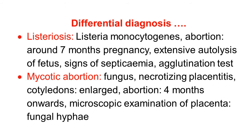Certain fungi cause abortion, known as mycotic abortion. There is characteristic necrotizing placentitis and the cotyledons are enlarged. Abortion occurs from 4 months of pregnancy onward. Confirmation is made by microscopic examination of the placenta, which shows characteristic fungal hyphae, by which we can diagnose mycotic abortion.